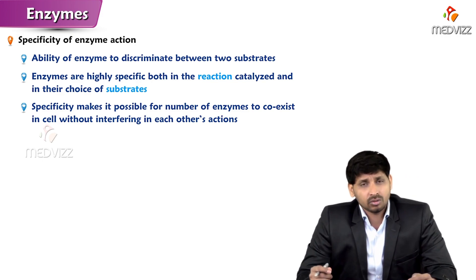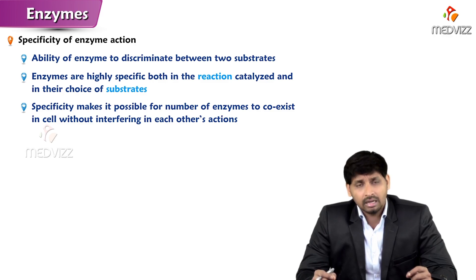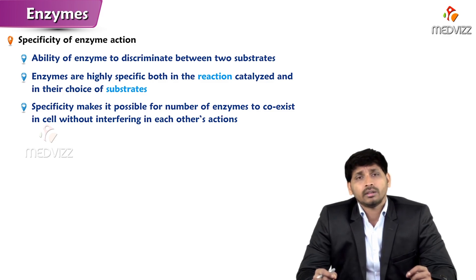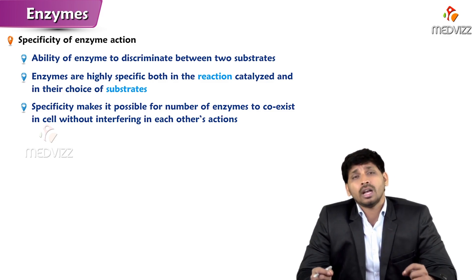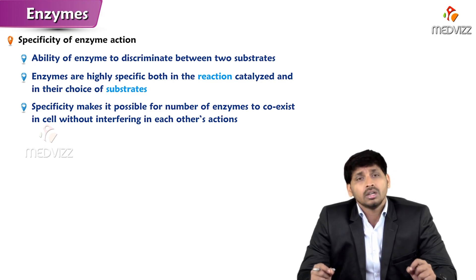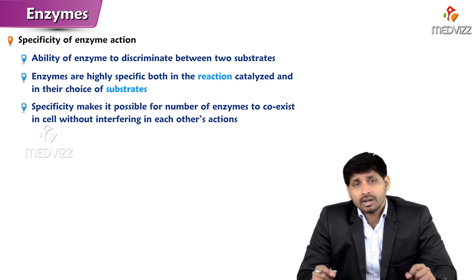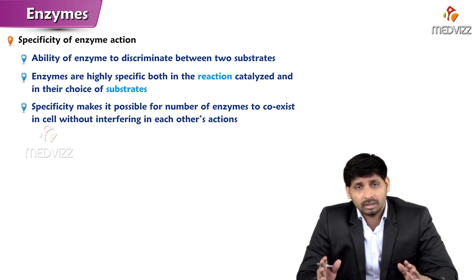So what is specificity? There are many chemical reactions taking place in our cell, and there are thousands of enzymes working continuously on them. So how do they differentiate between different chemical reactions to work on? They have a character called specificity. Each enzyme has their own specificity.